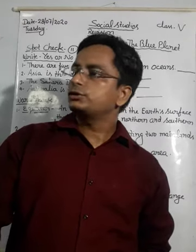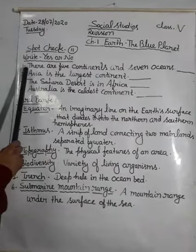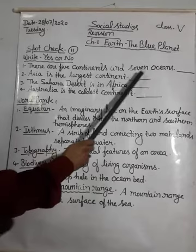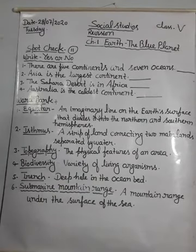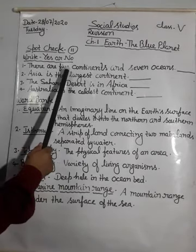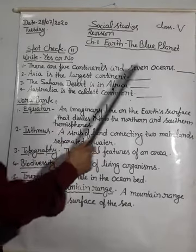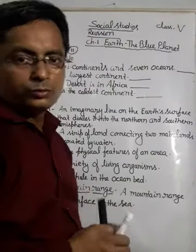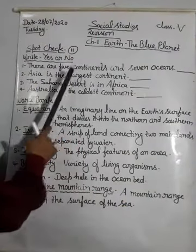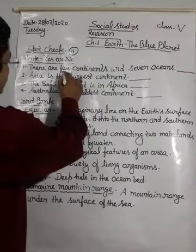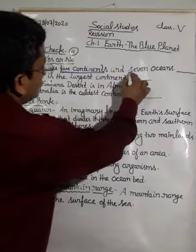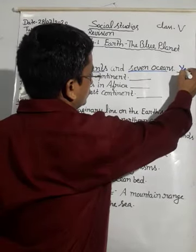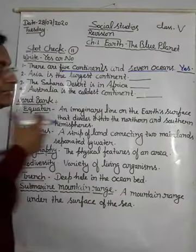The first sentence is: there are five continents and seven oceans. Students, there are five continents and seven oceans — can you tell me how many continents? Five continents and seven oceans. It is true, so we will write here: yes.